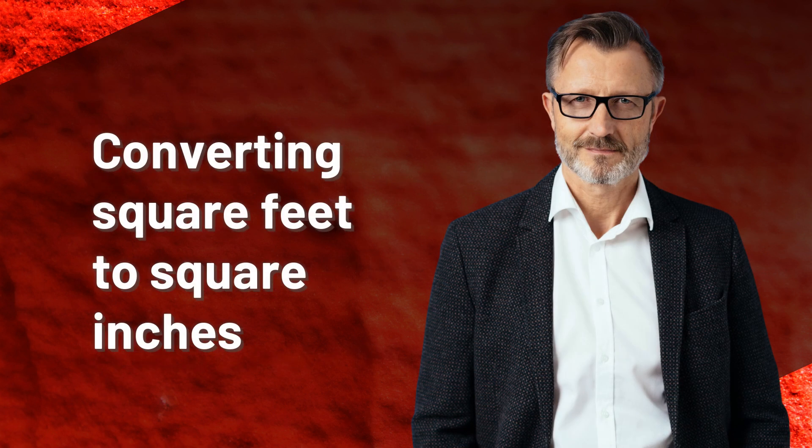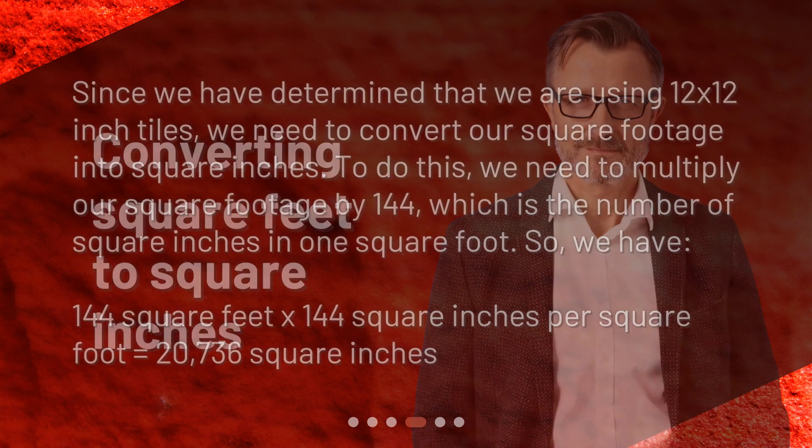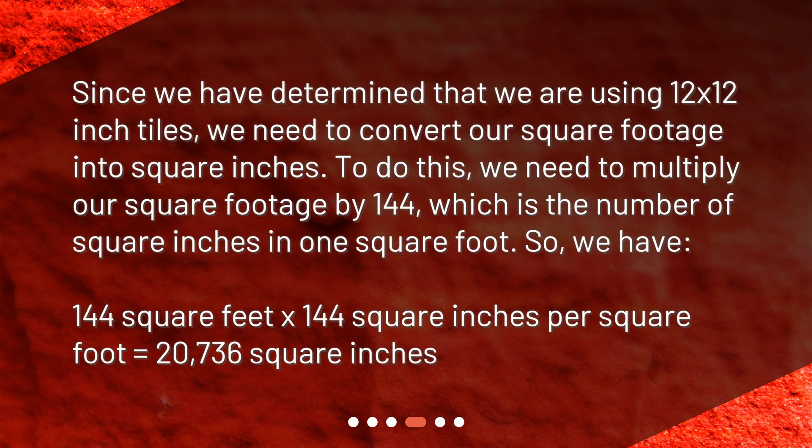Converting square feet to square inches. Since we have determined that we are using 12 by 12 inch tiles, we need to convert our square footage into square inches. To do this, we need to multiply our square footage by 144, which is the number of square inches in one square foot. So, 144 square feet by 144 square inches per square foot equals 20,736 square inches.